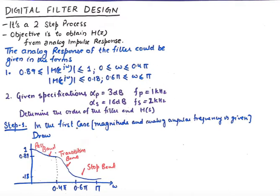Step number one is to draw the graph between frequency and magnitude. In the first case, from 0 to 0.4π the magnitude remains between 1 and 0.89 — so the magnitude has dropped from 1 to 0.89 at 0.4π. From 0.6π to π the magnitude is always less than 0.18. Joining these regions, we see that this becomes the passband, this becomes the stopband, and the region in between is the transition band.